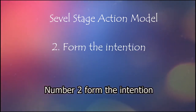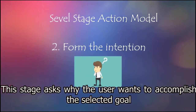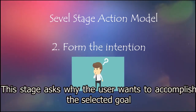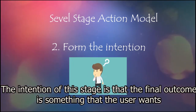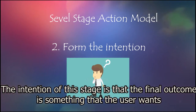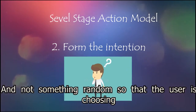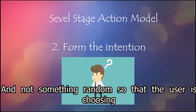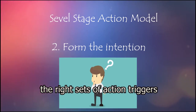Number 2: Form the intention. This stage asks why the user wants to accomplish the selected goal. The intention of this stage is that the final outcome is something that the user wants and not something random, so the user is choosing the right set of action triggers.